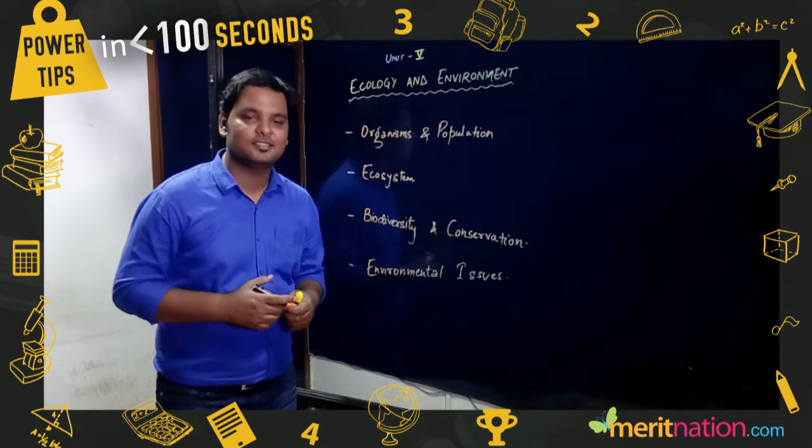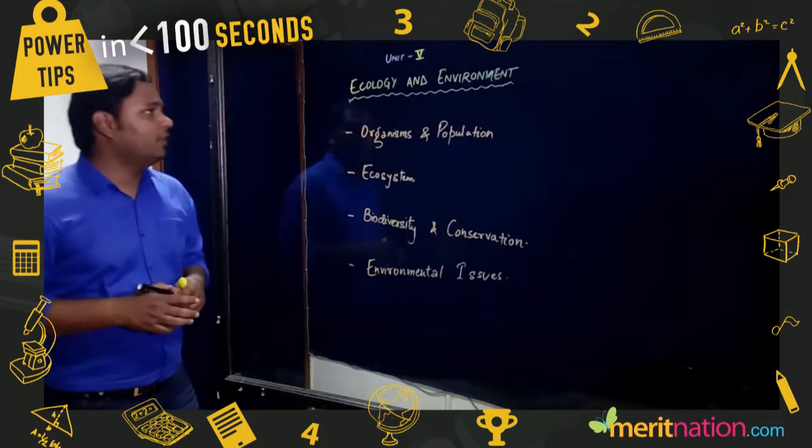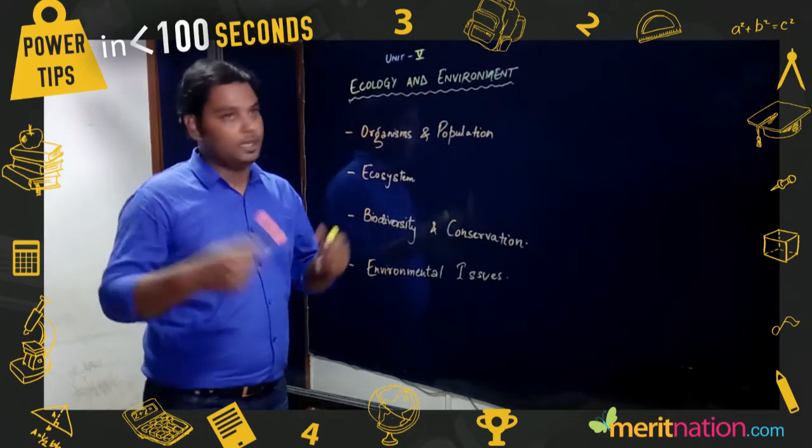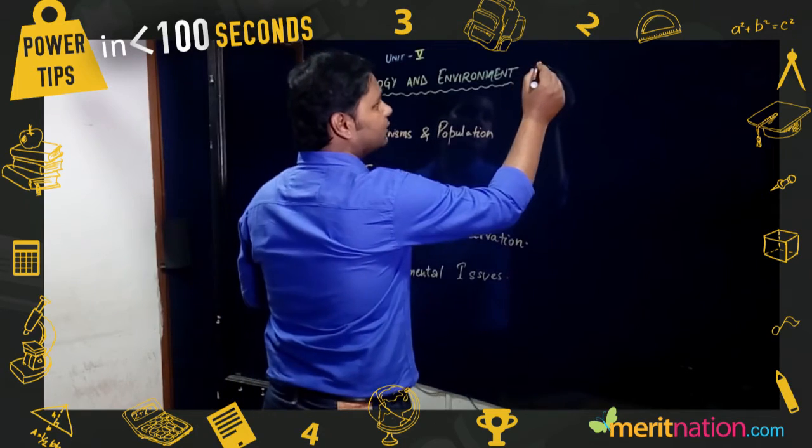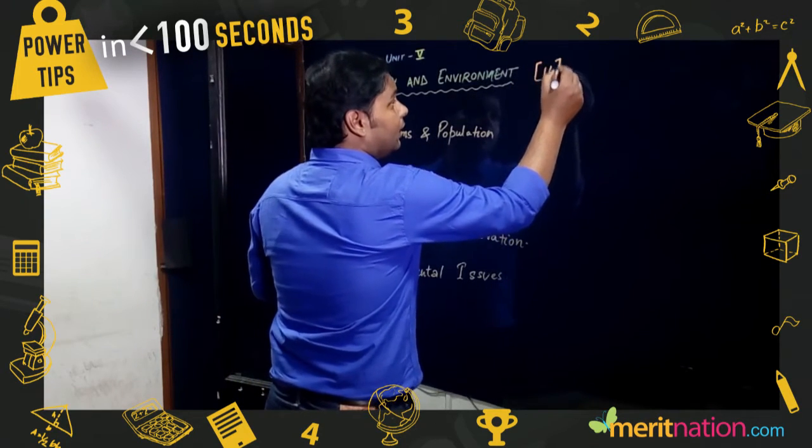So what are the important topics in this unit? Absolutely, we are now at the last unit of our NCERT book, that is Ecology and Environment, and it carries 14 marks in your board examination.